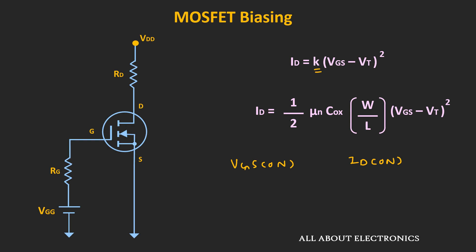Using this expression, for the given value of Vgs, we can find the drain current ID — or vice versa, for the required value of the drain current, we can find the required value of the voltage Vgs. Once we know this drain current ID, by properly selecting the drain resistor, we can ensure that the MOSFET indeed operates in the saturation region.